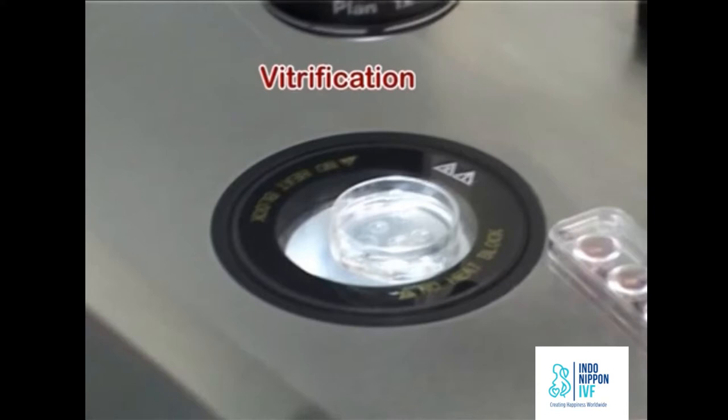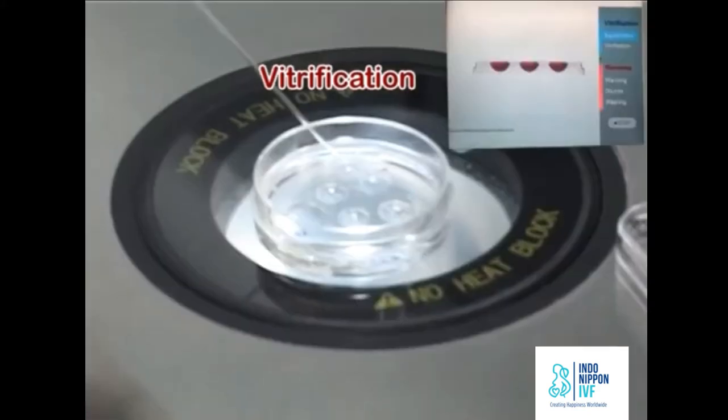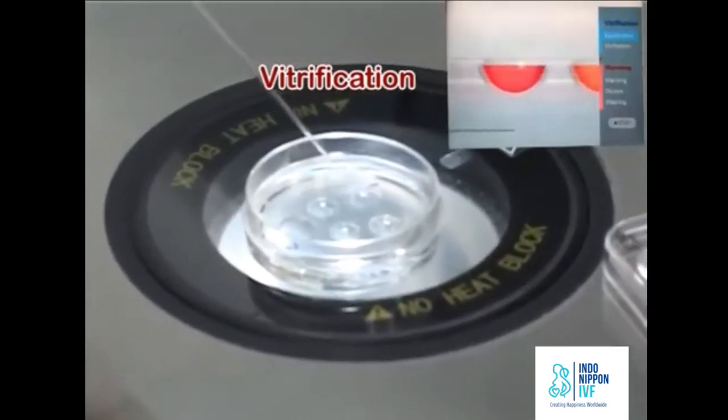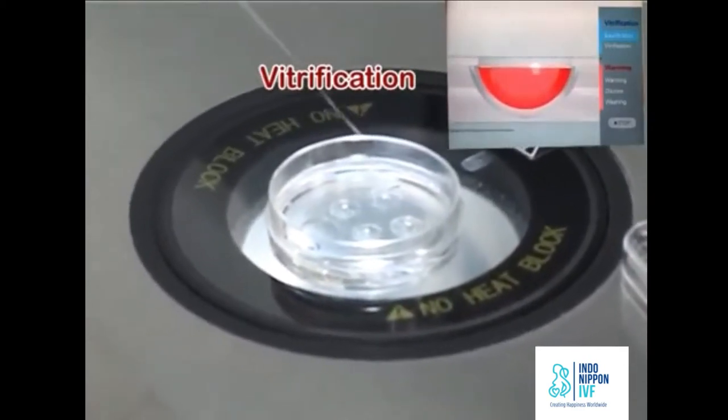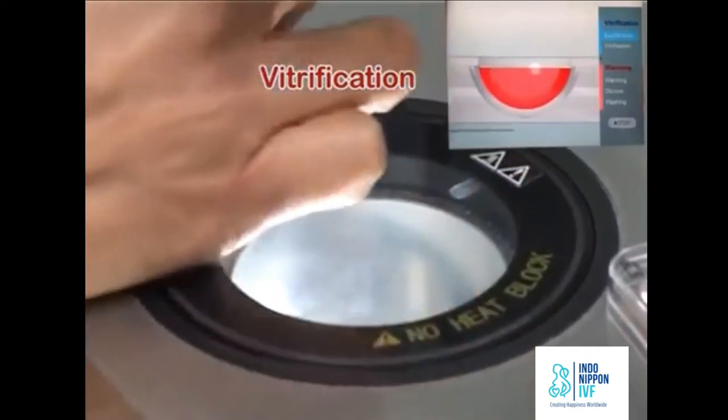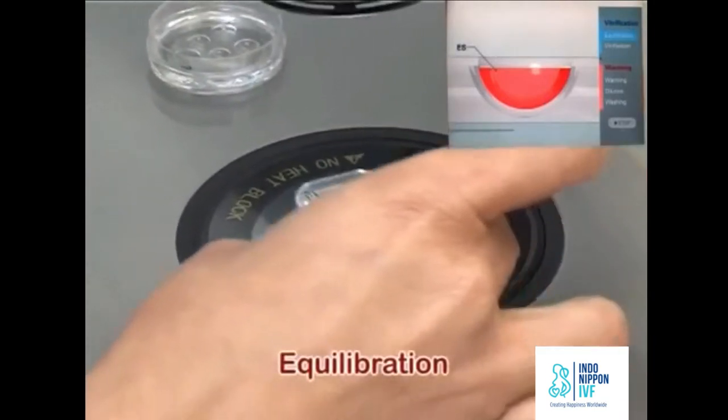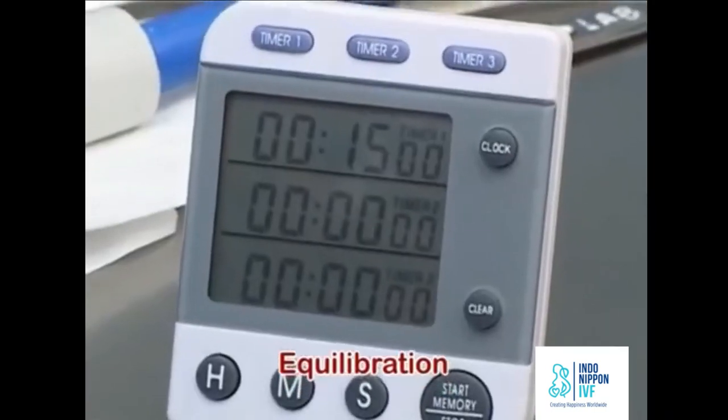Check the quality of the oocyte under the microscope. Note the width of the perivitelline space. For oocyte vitrification, the cumulus cells must be removed. Aspirate the oocyte at the tip of the pipette. Transfer the oocyte with minimal amount of medium on the surface of ES well and start the stopwatch.